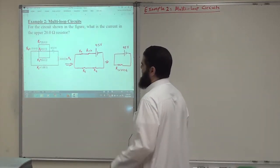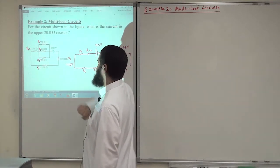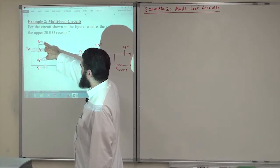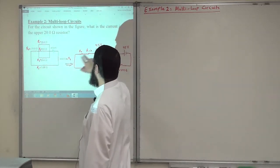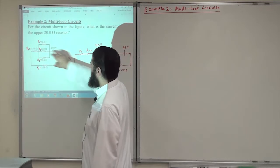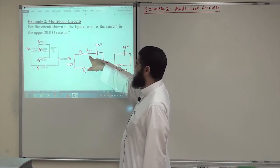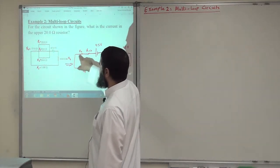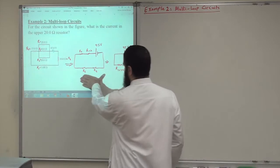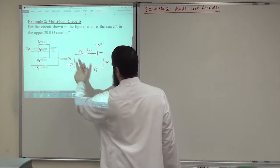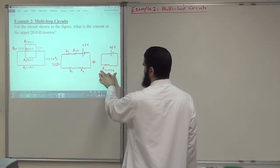First of all, I would like to find the equivalent circuit for this large circuit. It is very clear that R1, R2, and R3 are connected in parallel, so their equivalent resistance will be R123. I can replace R1, R2, R3 with their equivalent resistance R123. Then R123 is connected in series with R4, R5, and R6.